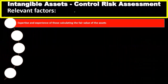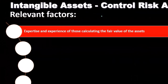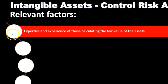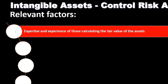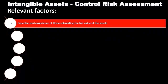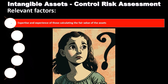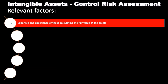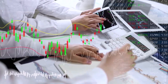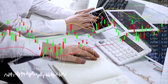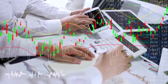Now we're going to consider the control risk assessment. The types of controls that are going to be put in place — as the auditor, we want to be able to rely on controls to some extent if we can, and then consider the substantive tests after the consideration of the controls. Relevant factors related to controls include the expertise and experience of those calculating the fair value of the assets. It really depends on who is calculating the value of these intangible assets and how they were put on the books — where the intangible asset came from, who came up with the calculation, how it got recorded — so that we can consider if they have the experience and expertise to perform the proper calculation.